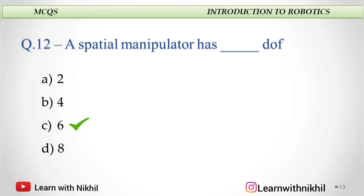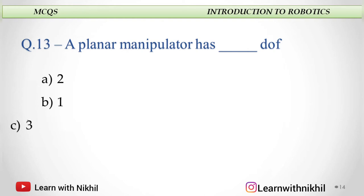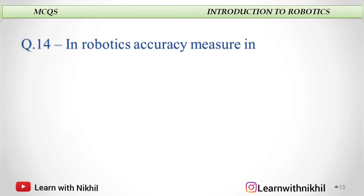If you want to know the explanation of this, you can visit my YouTube video lectures on chapter number one — the link is in the description box below. Next question: A planar manipulator has dash DOF — two, one, three, or six? The answer is three.